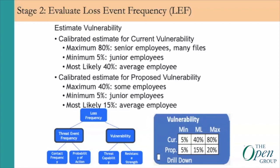We also need to look at the vulnerability. Calibrated estimates are developed for both current and proposed vulnerability. Senior employees would be collecting accesses over their career — as they move from job to job, accesses are added but tend never to be deleted — whereas the most junior employee has relatively small amounts of access. In the proposed solution, the whole point is to remove those unnecessary accesses, so the maximum drops substantially, and the average employee's access is also significantly reduced.